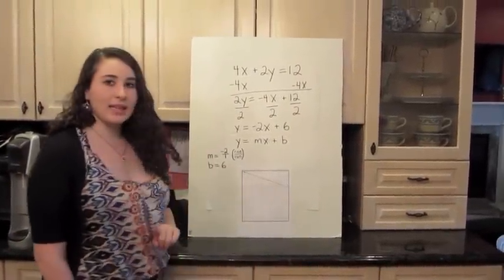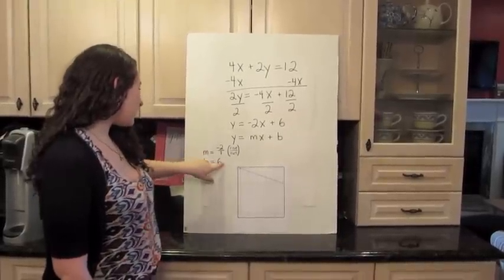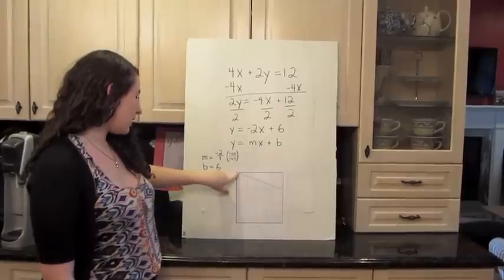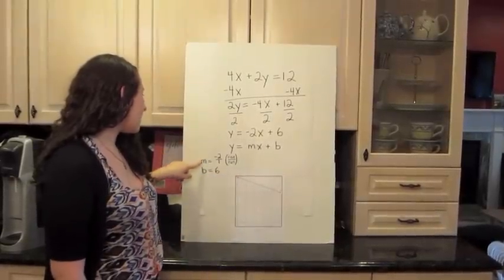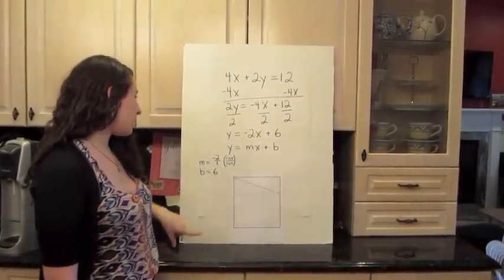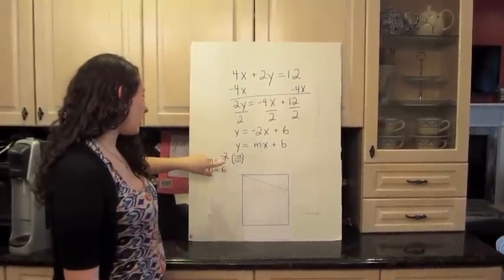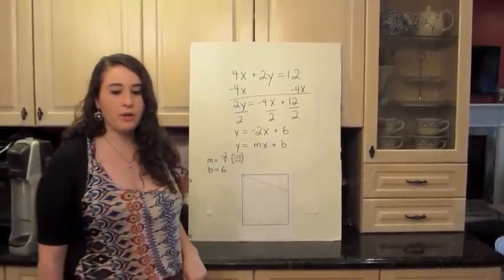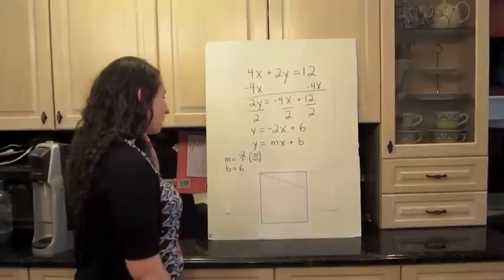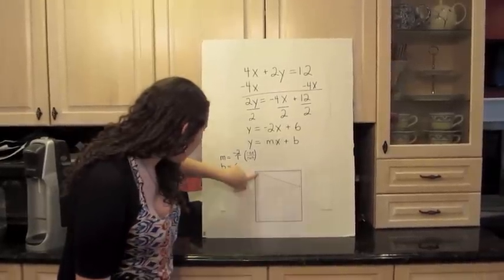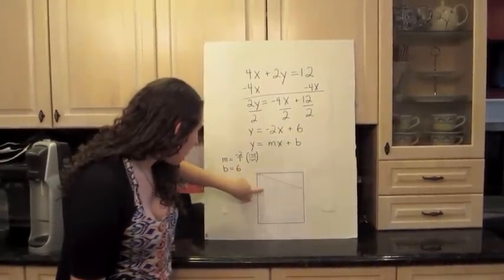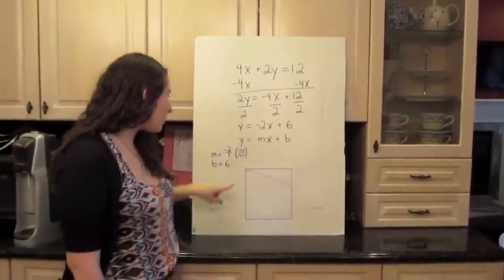So to plot this on a graph, b equals 6. So you plot b equals 6. And then m equals negative 2. But according to the rules of rise over run, you put a 1 under it. Because for every 1 across, you go down 2. So go down 2 and over 1, and then you connect the line.